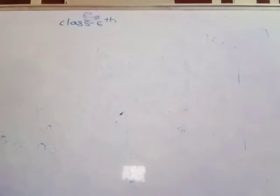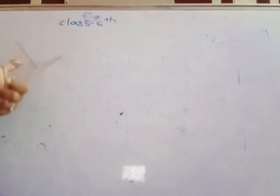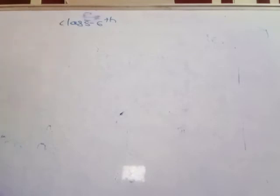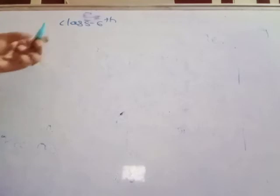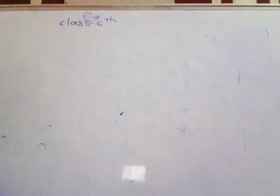Look at these two set squares. Observe their angles and see how they can be used to draw angles of 90 degrees, 60 degrees, 30 degrees, and 45 degrees. These are also used to draw parallel and perpendicular lines. And this divider is used to measure the distance between two points, and it can also be used to draw a line segment equal to a given line segment.